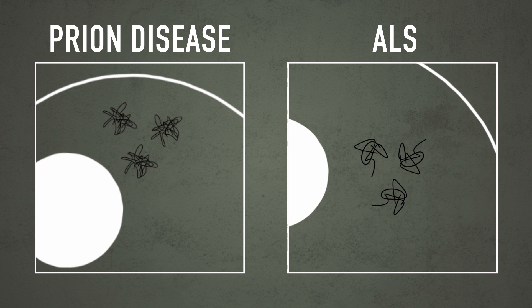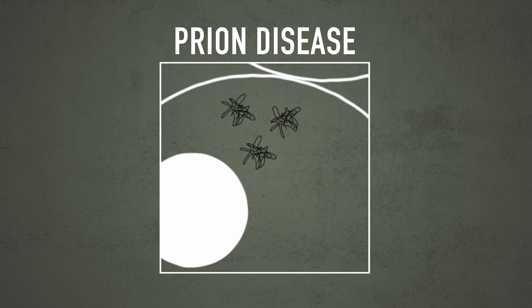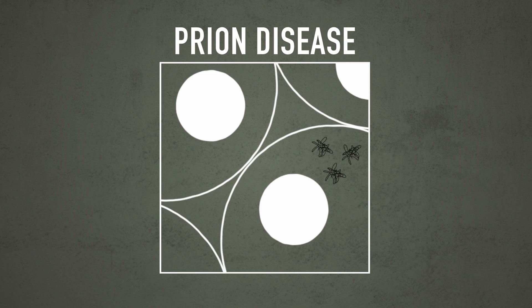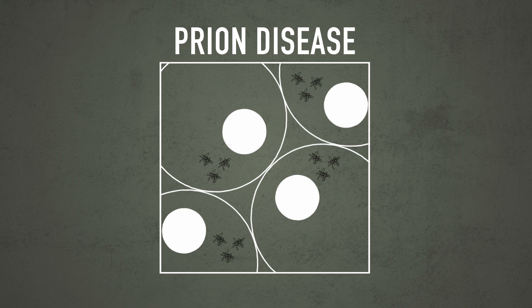Another key feature is that in prion disease, these clumps of aggregated prion protein actually move from cell to cell.